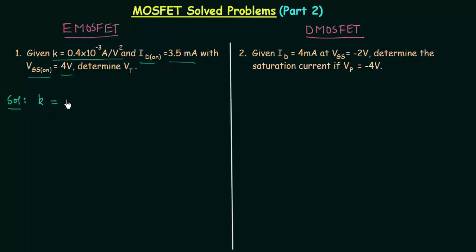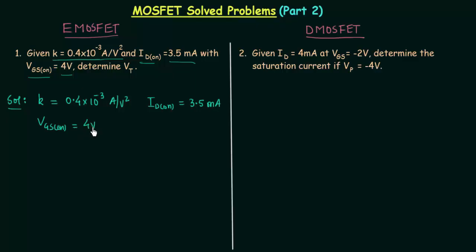K is given as 0.4 × 10⁻³ A/V². ID(on) is also given as 3.5 milliamp. VGS(on) is equal to 4 volt and we have to find the threshold voltage VT. This problem involves constant K and voltage VT, which are parameters of enhancement type MOSFET, so this problem is based on enhancement type MOSFET.